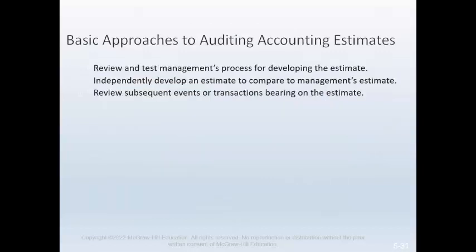Auditors should be especially careful regarding financial statement accounts affected by management estimates, particularly those for which a wide range of accounting methods are acceptable. First, the auditor determines whether all necessary estimates have been developed and accounted for properly. Then the auditor assesses the reasonableness of accounting estimates using one or more of three basic approaches: review and test management's process of developing the estimates; independently develop an estimate to compare with management's; and review subsequent events or transactions bearing on the estimate, such as actual payments of an estimated amount made subsequent to year-end.